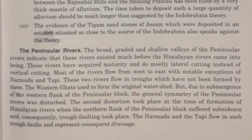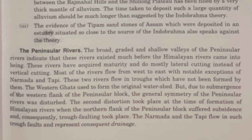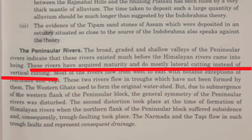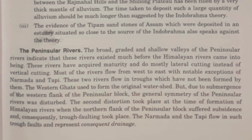Another set of rivers is the peninsular rivers. It is believed that the peninsular rivers existed much before the Himalayan rivers, meaning the peninsular rivers are older than the Himalayan rivers. This is because their valleys are broad, graded, and shallow, which is possible only when the river has attained its maturity age, where lateral cutting is more than vertical erosion.